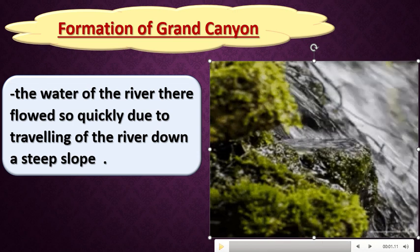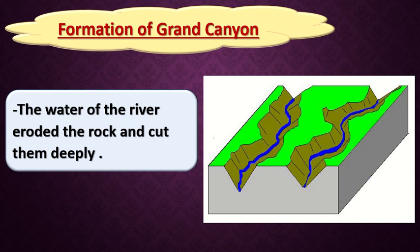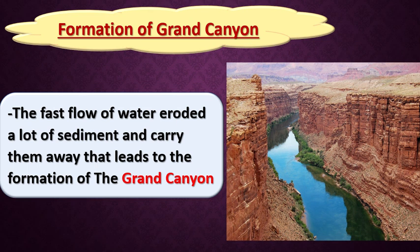When the water moves fast, it makes more erosion and takes more sediments from one place to another. The water moves down a steep slope, making more erosion. The fast flow of water erodes a lot of sediments and takes them for a long distance, forming a very deep canyon - the Grand Canyon. So the Grand Canyon is very large and steep due to the fast flow of water, because the river moves downhill down a steep slope.